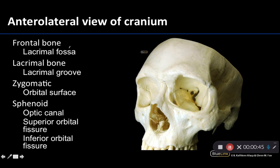Let's start with the lacrimal fossa of the frontal bone. You have two very similarly named structures: lacrimal fossa and lacrimal groove. The lacrimal fossa of the frontal bone is where the true lacrimal gland is going to sit. We're going to have the actual lacrimal gland sitting in the lacrimal fossa, which is right about here.